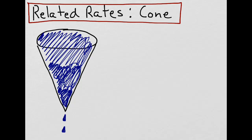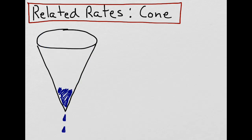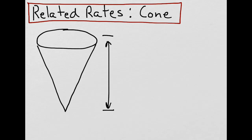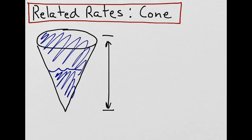Let's say that we had a cone filled with water, and that over time water drained out of the cone at a constant rate until it was empty. We're interested in finding the height of the water at various points and how it's changing over time — at the end when there's no water in the cone, in the middle somewhere, and also at the beginning when it's full of water. So we're interested in finding the change in height with respect to time at these various points.